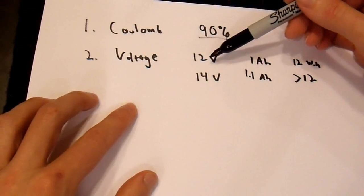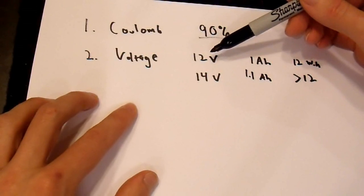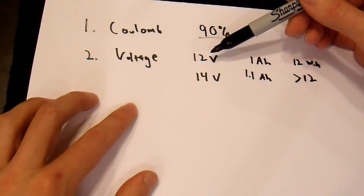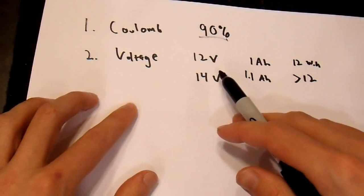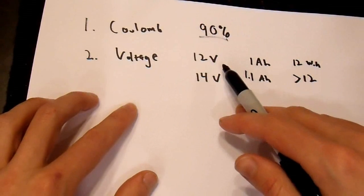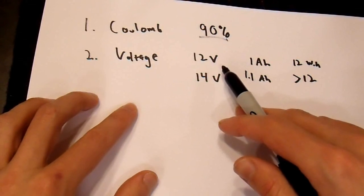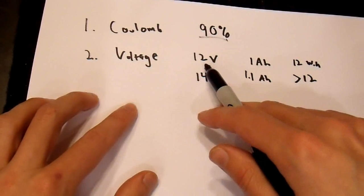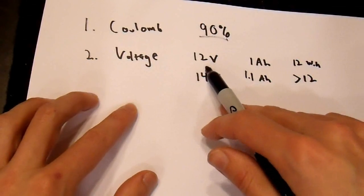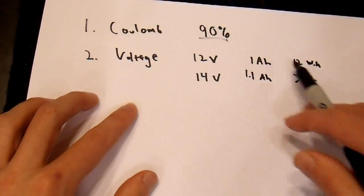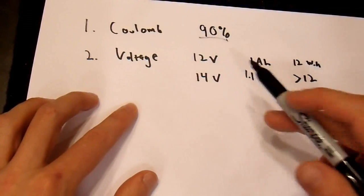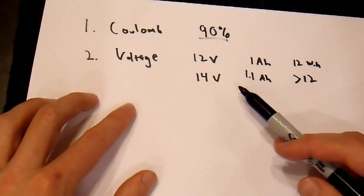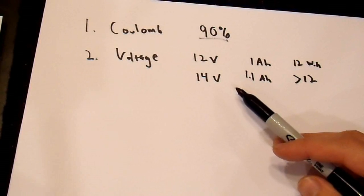Now if you discharge your battery very slowly, it may not discharge at 12 volts — it may discharge at 12.5 volts, and now you get a higher efficiency. If you discharge your battery very quickly, for example a starter on a car, this may drop to 7 volts, and now you get a much lower efficiency. So where does this voltage go? And that's the root of the misconceptions about Peukert's equation.